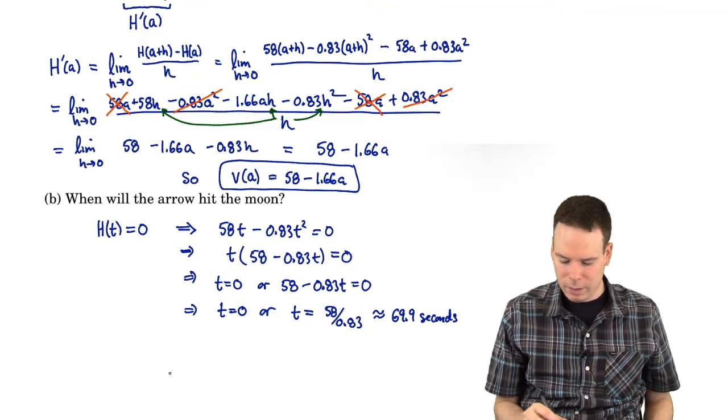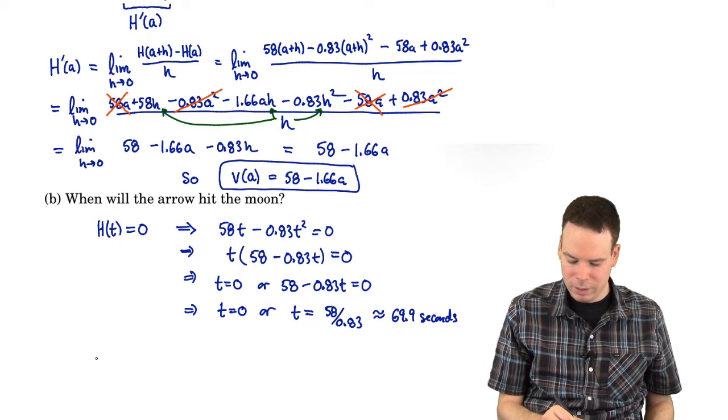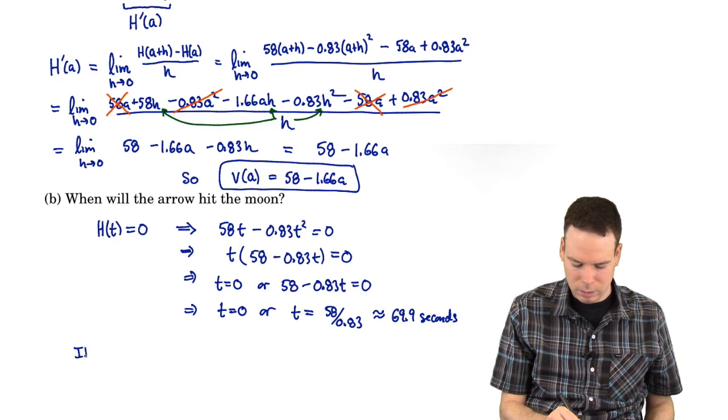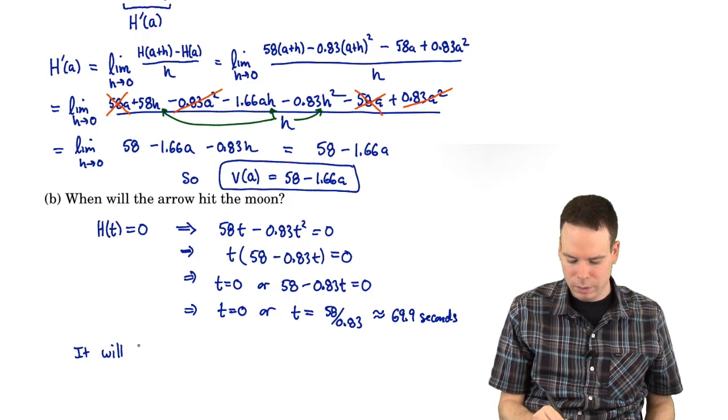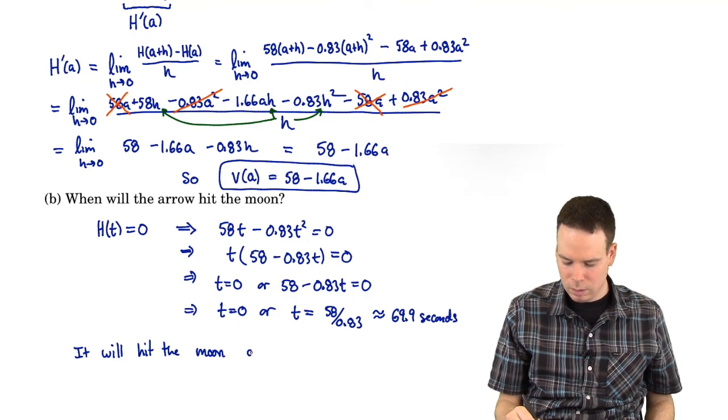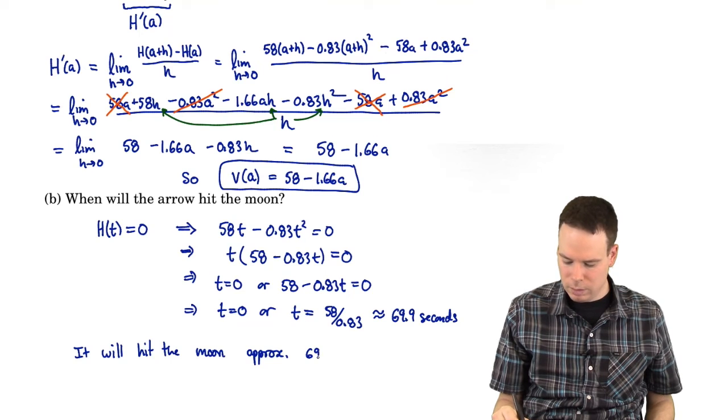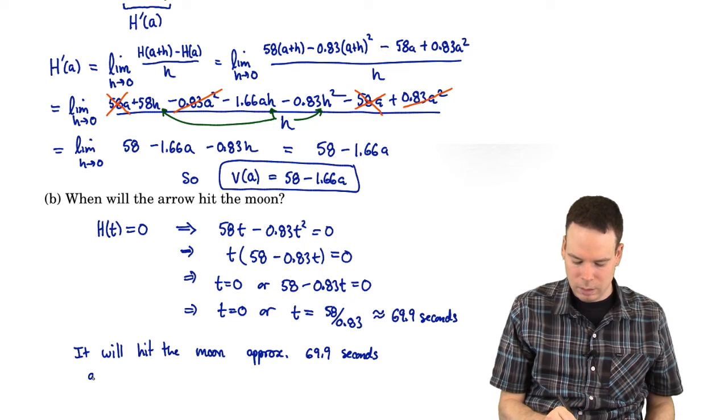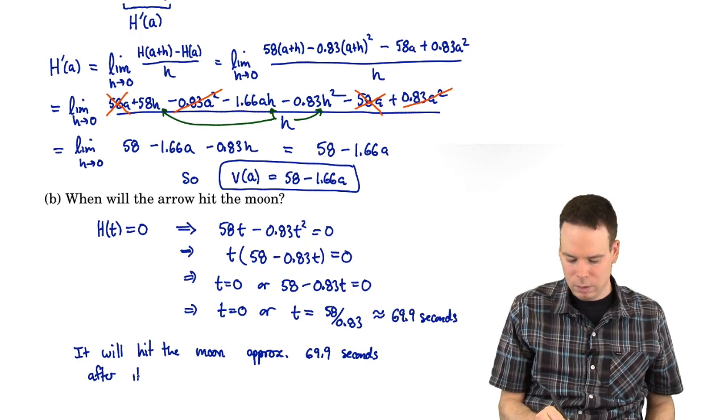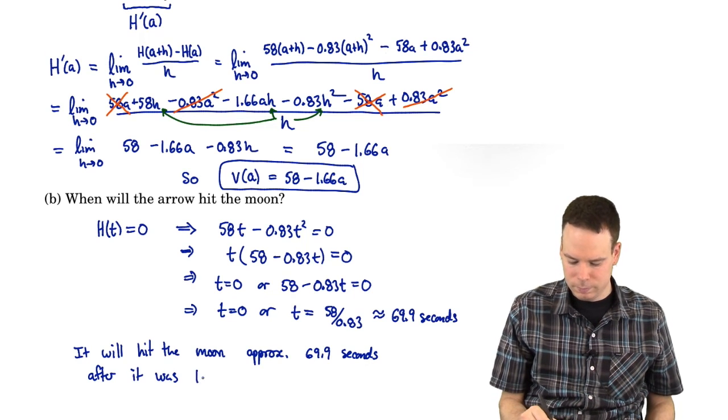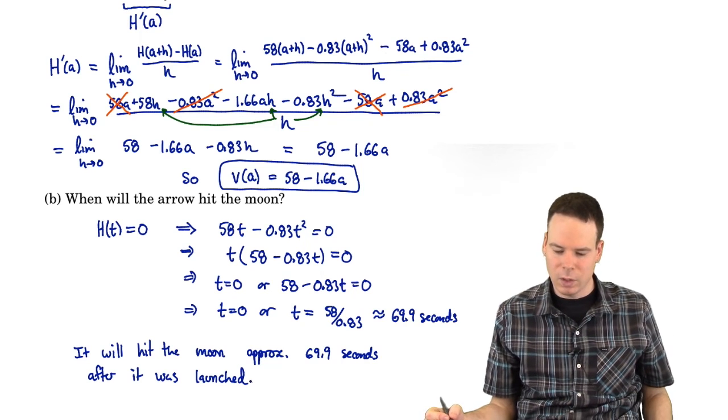So the other solution would be t being 58 over 0.83. And that's approximately 69.9 seconds. So what we have is that when will the arrow hit the moon? It will hit the moon approximately 69.9 seconds after it was launched.